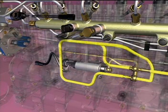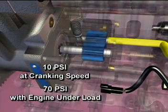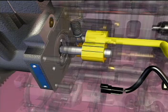Fuel enters the gear pump where it is pressurized to a minimum of 10 psi at cranking speed and 70 psi with the engine under load. Before the fuel leaves the gear pump, it passes a pressure regulator valve.